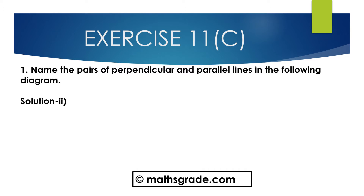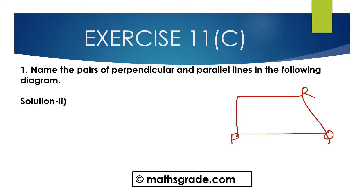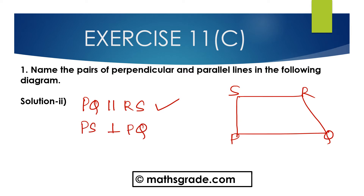Now question number 2: Name the pairs of perpendicular and parallel lines of the given diagram. First draw the given diagram. This is P, U, R, S. PQ is parallel to RS. PS is perpendicular to PQ, and PS is perpendicular to SR.